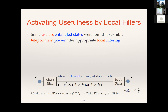It turns out that if you make a good choice of filters, then in some instances you could actually end up with quantum states that become useful after these operations. In the sense that, up to normalization, the filtered states can be written as A⊗B ρ A†⊗B†, where A and B are just matrices acting on the local subsystems — they could be representing polarizers, whatever. Useful in the sense that afterwards the fully entangled fraction beats the classical threshold.